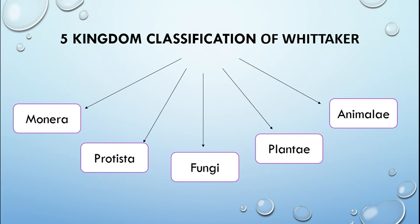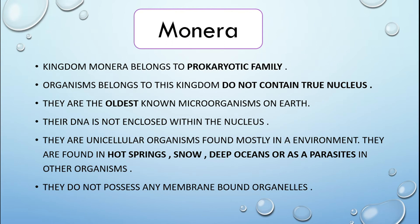The five kingdom classification given by Whittaker includes Monera, Protista, Fungi, Plantae, and Animalia. Starting with Kingdom Monera: it belongs to the prokaryotic family and is very primitive. Organisms belonging to this kingdom do not contain a true nucleus. They are the oldest known microorganisms on Earth; their DNA is not enclosed within a nucleus. They are unicellular organisms found mostly in hot springs, snow, deep portions, and also as parasites. They do not possess any membrane-bound organelles.